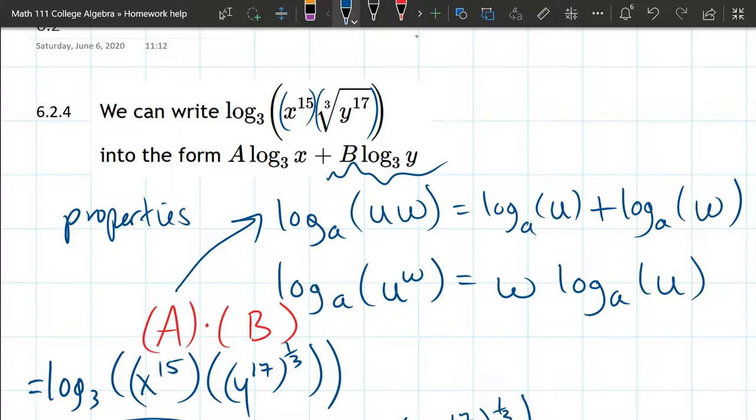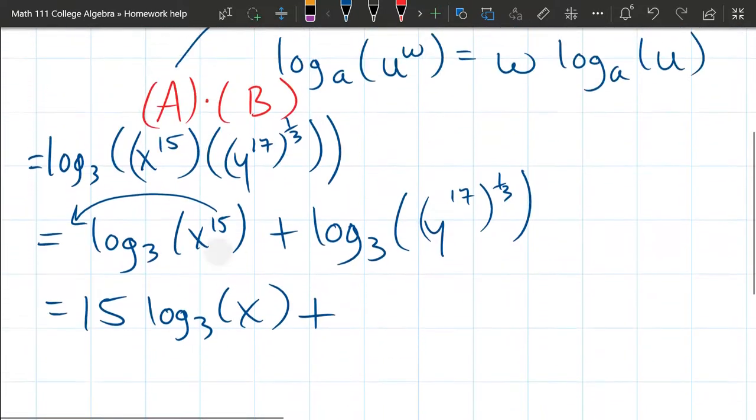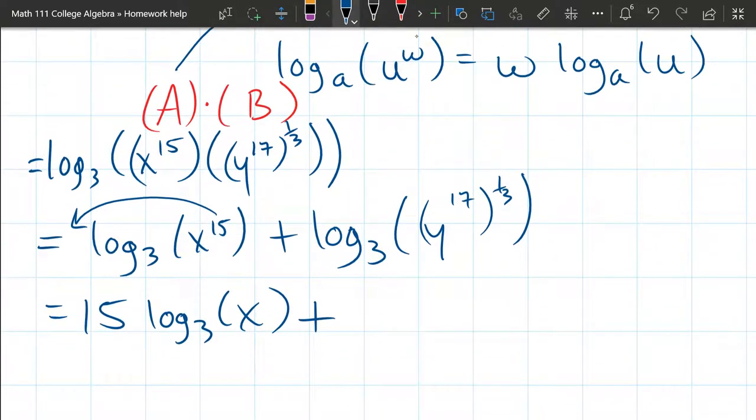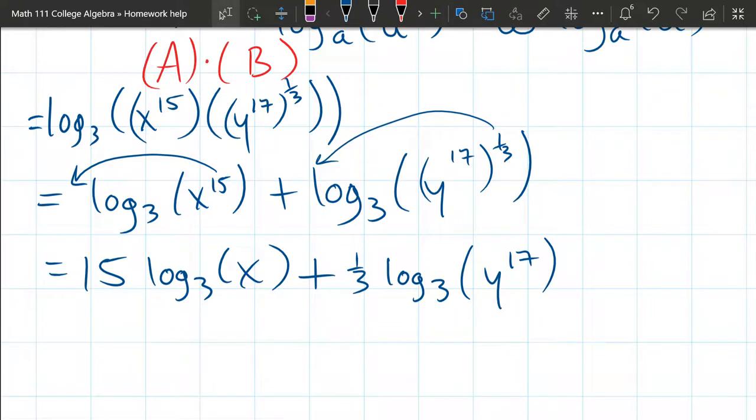It's a little bit more complicated because there's two powers going on. And we're supposed to just have log 3 of Y with no powers in there. So let's go ahead and look at this. We could use order of operations. This is the innermost thing happening. So this one-third power we're going to bring in front. So we got one-third log 3 of Y to the 17th power.